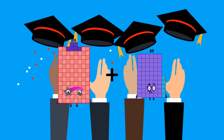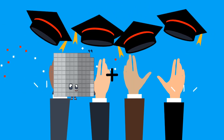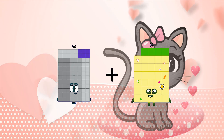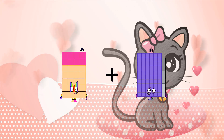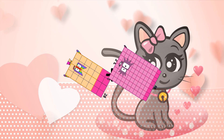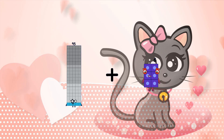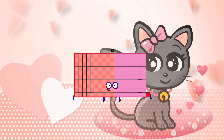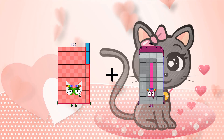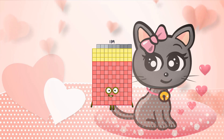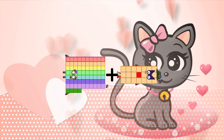106 plus 28 equals 134. 96 plus 34 equals 130. 28 plus 88 equals 116. 95 plus 86 equals 181. 105 plus 34 equals 139. 74 plus 21 equals 95.